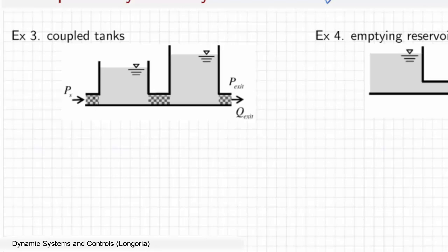These symbols here represent that I have some resistance in these pipes. Let's go ahead and assume that, just to make them different from the previous examples, these are linear. So we'll call this one R1, R2, and these are R3.